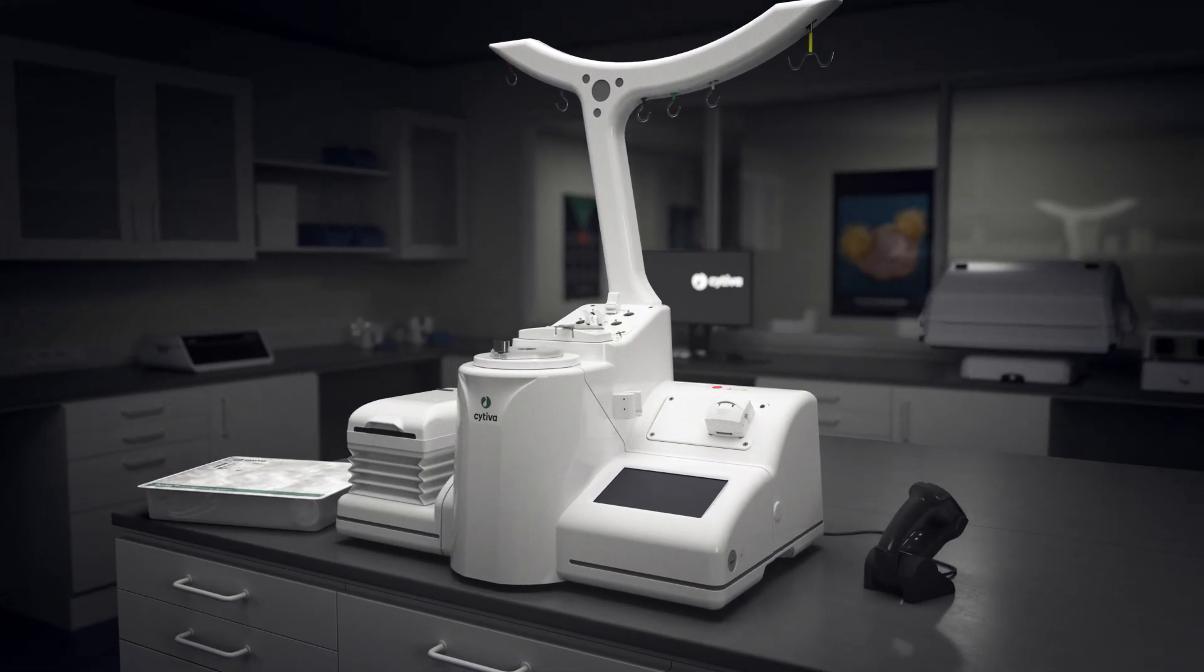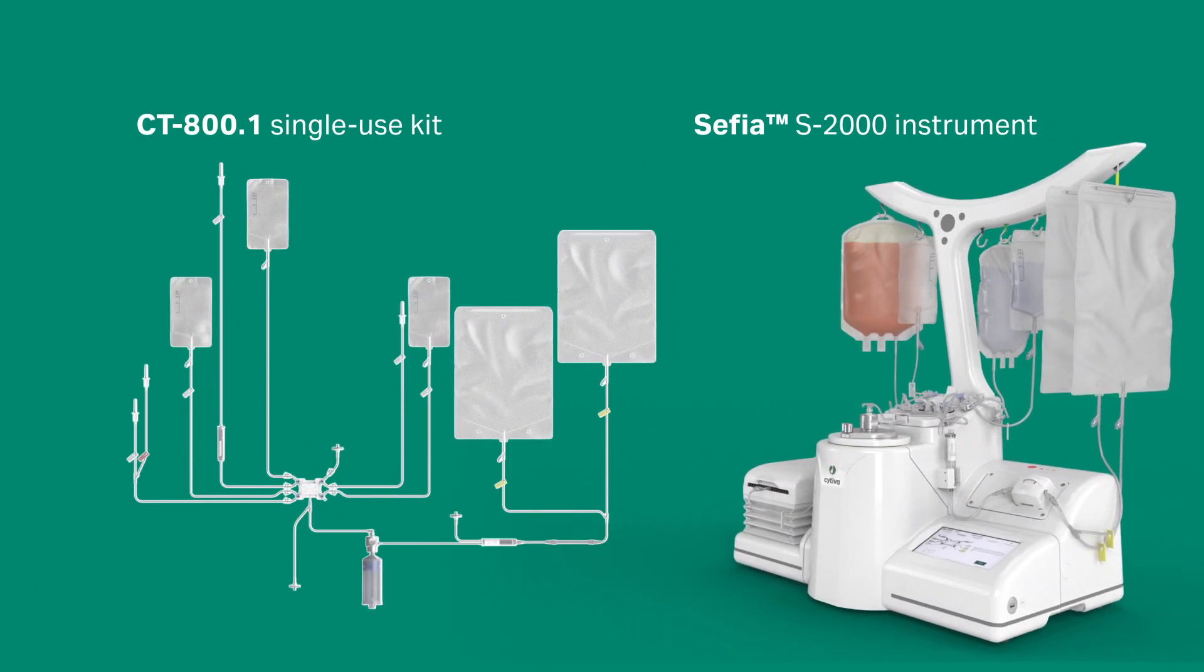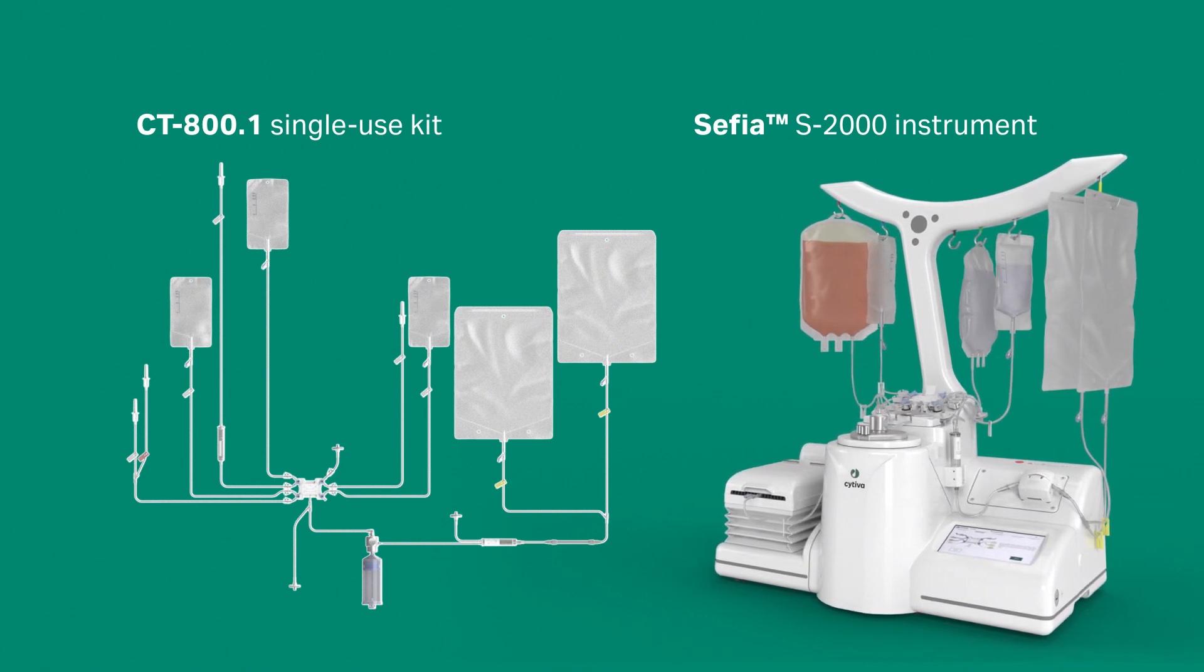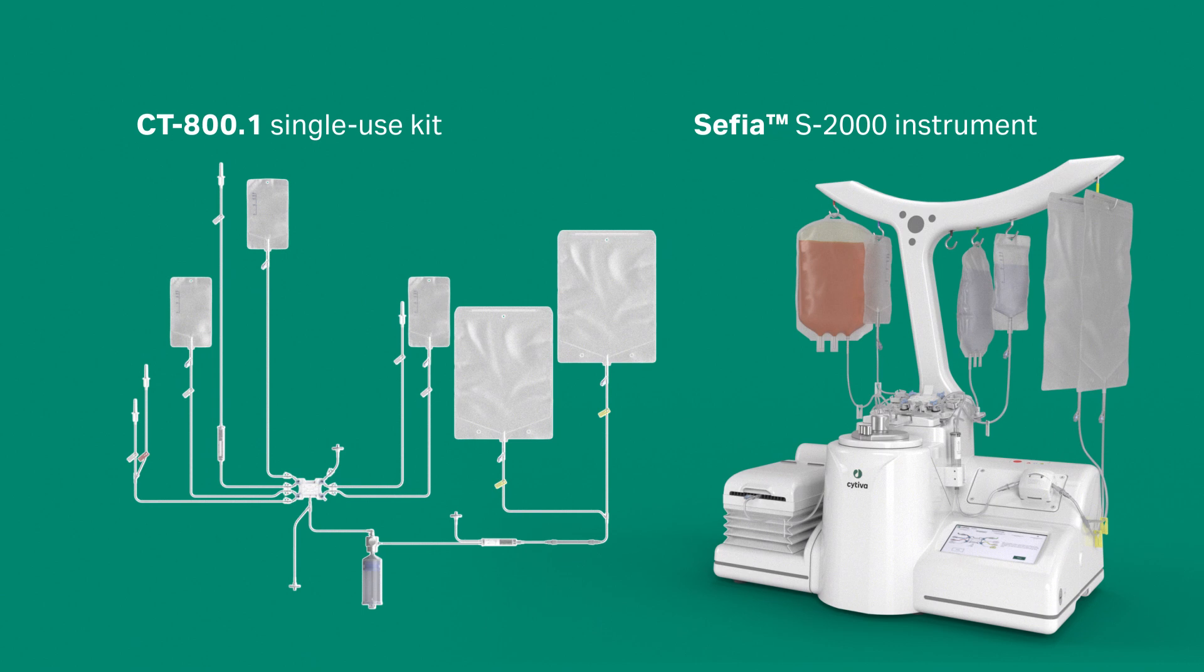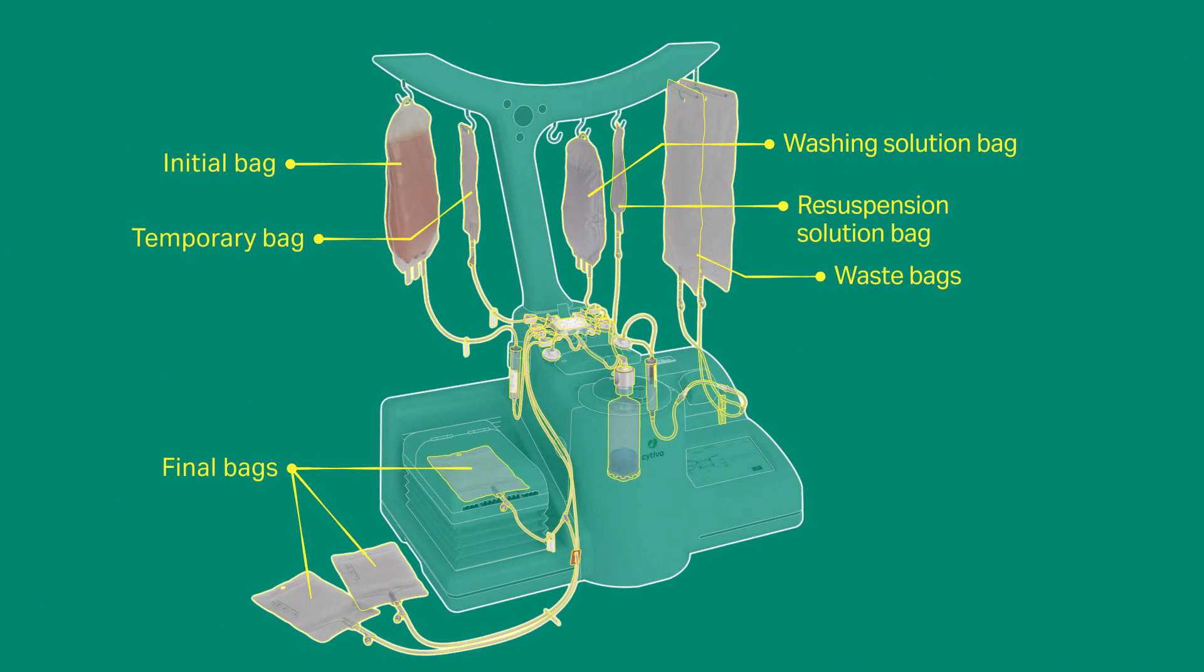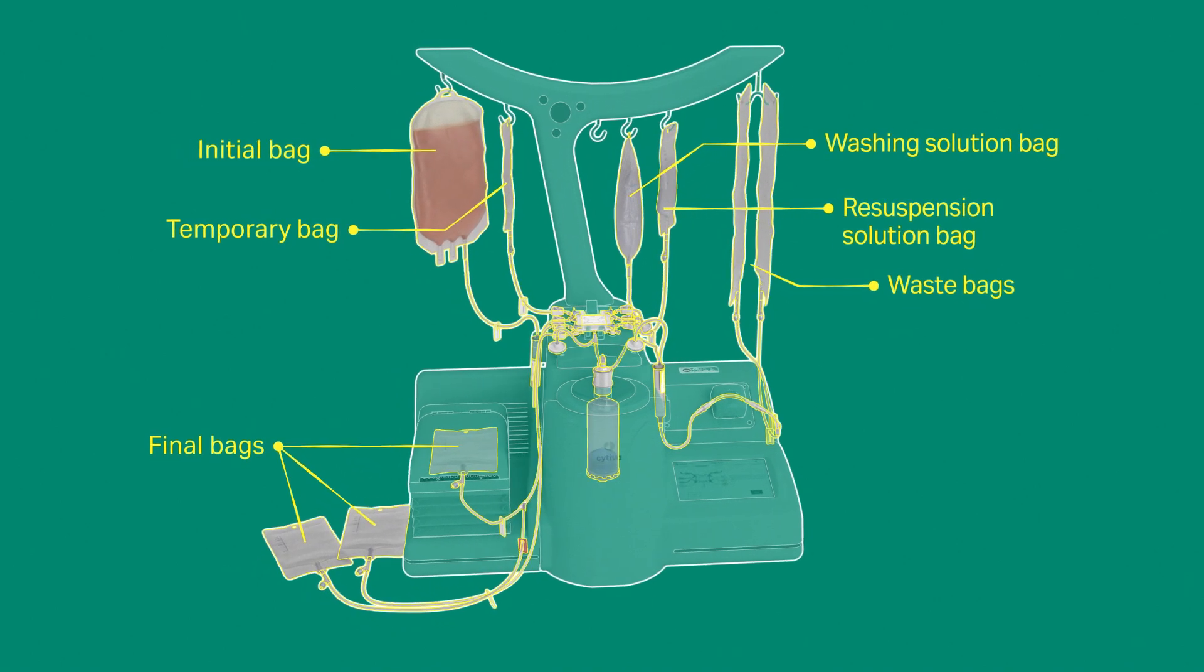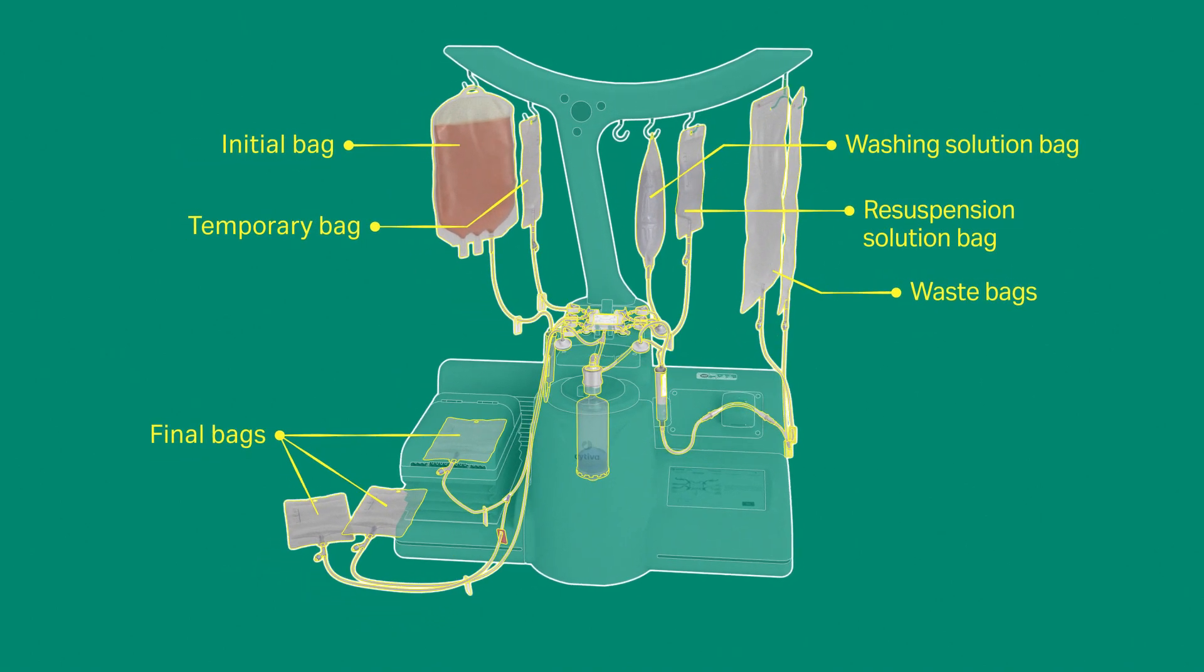FlexCell uses continuous flow technology by combining the capabilities of Cephia S2000 cell processing instrument and CT800.1 single-use kit. You can concentrate up to 10 liters per hour thanks to the system's peristaltic pump and separation chamber design.